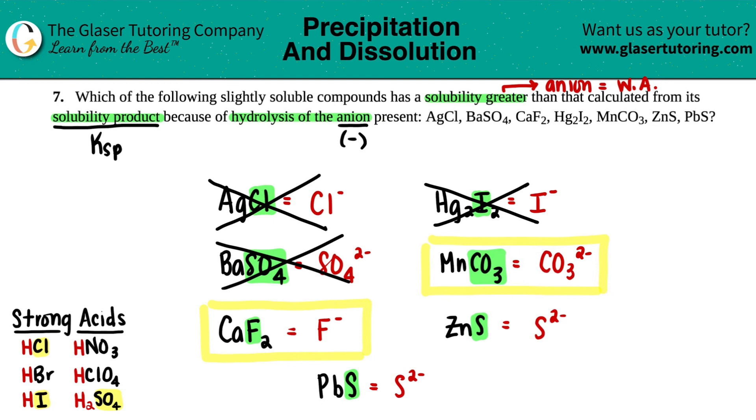And then both these are the same—they both have S in their anions. Is there just an S as one of my anions in my strong acids? Nope. So that means that both of these had to come from a weak acid, and therefore both of them would make the solubility greater. And there you go, four answers for this one.